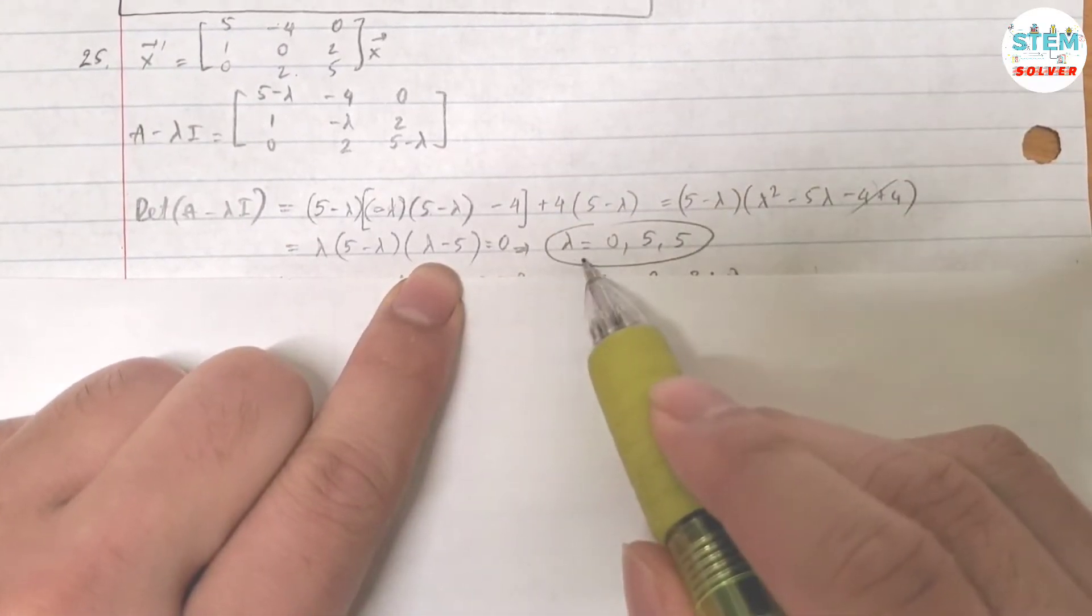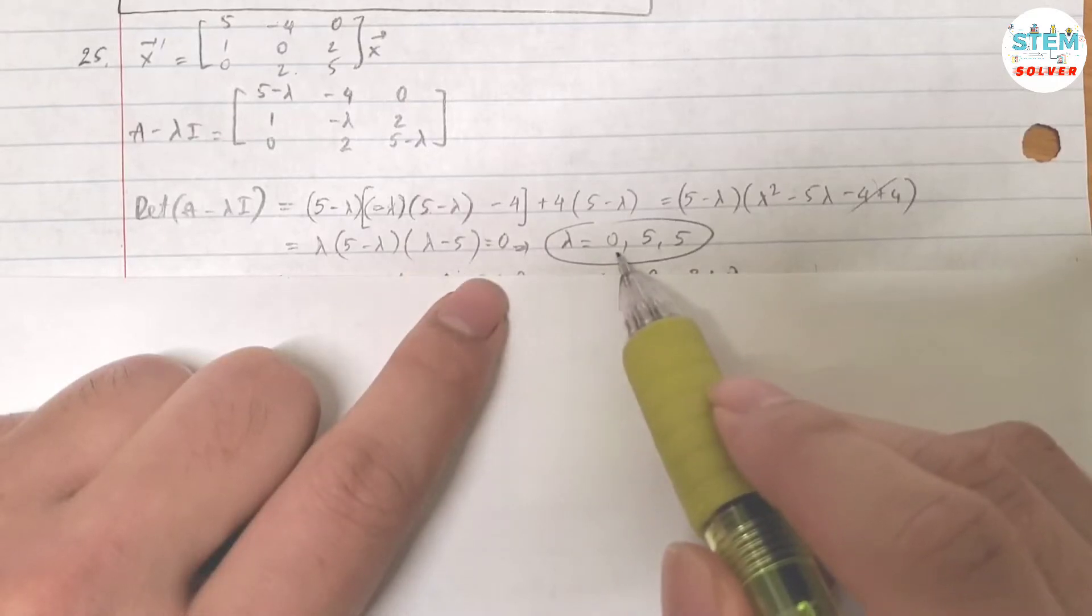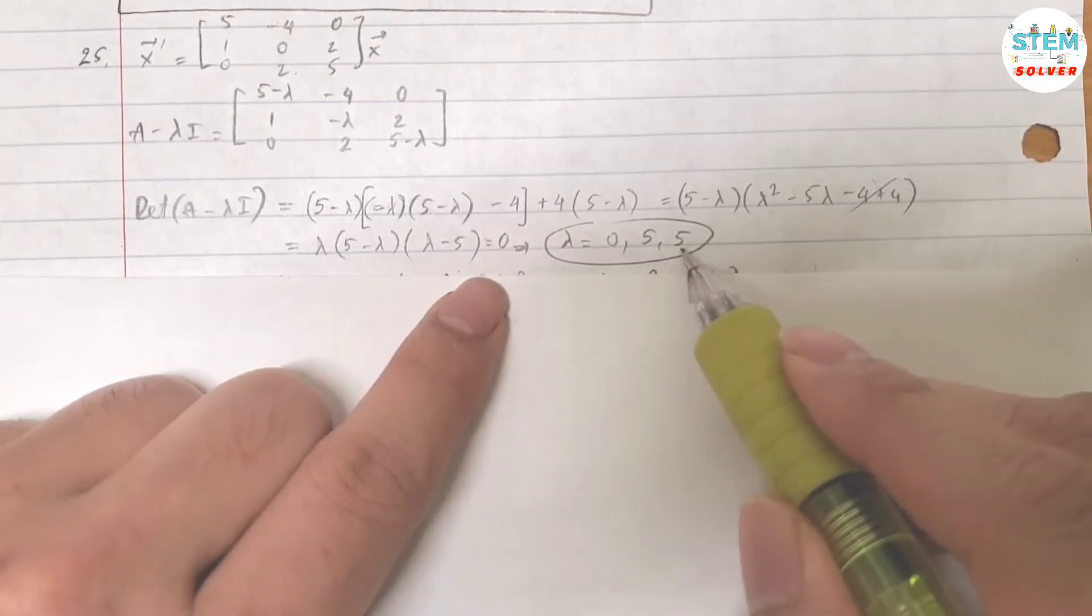Then so for lambda, you will get lambda equals 0, 5, and 5. Just repeated values.